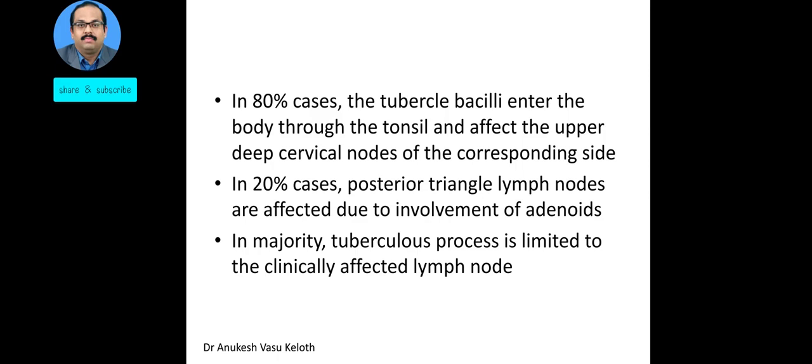Regarding the pathogenesis, in 80% of cases the tubercle bacilli enter the body through the tonsils and from there affect the upper deep cervical nodes of the corresponding site. In 20% of cases, the posterior triangle lymph nodes are affected due to involvement of the adenoids. In the majority of affected patients, the tuberculosis process is limited to the clinically affected lymph nodes, meaning that features of pulmonary tuberculosis may not be present in most individuals.